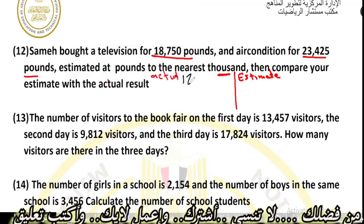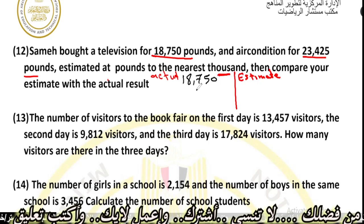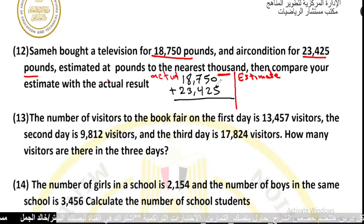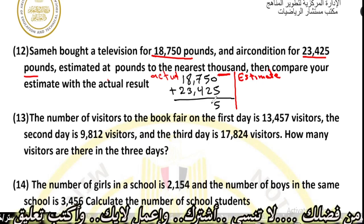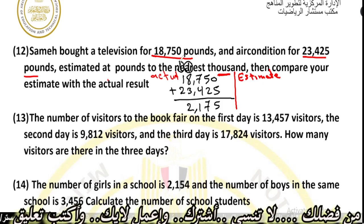The two numbers are 18,750 and 23,425. Adding the actual values: 0 plus 5 equals 5, 5 plus 2 equals 7, 7 plus 4 equals 11 — write 1 carry 1, 1 plus 8 plus 3 equals 12 — write 2 carry 1, 1 plus 1 plus 2 equals 4. The actual result is 42,175.